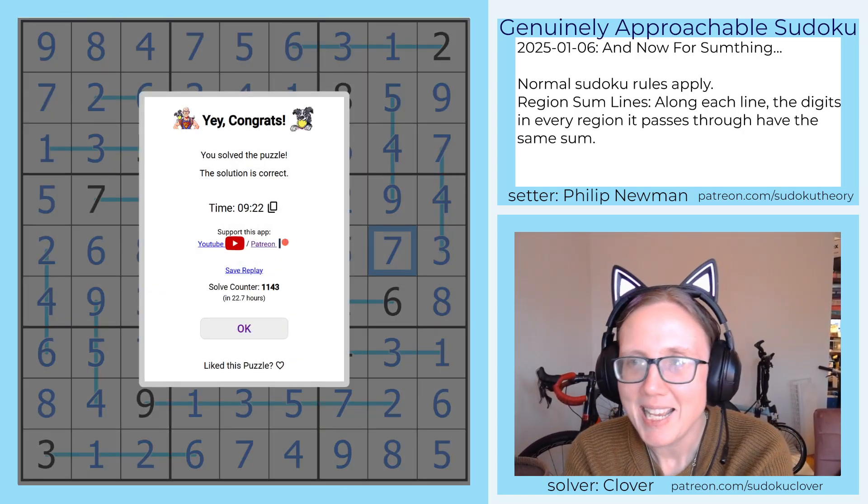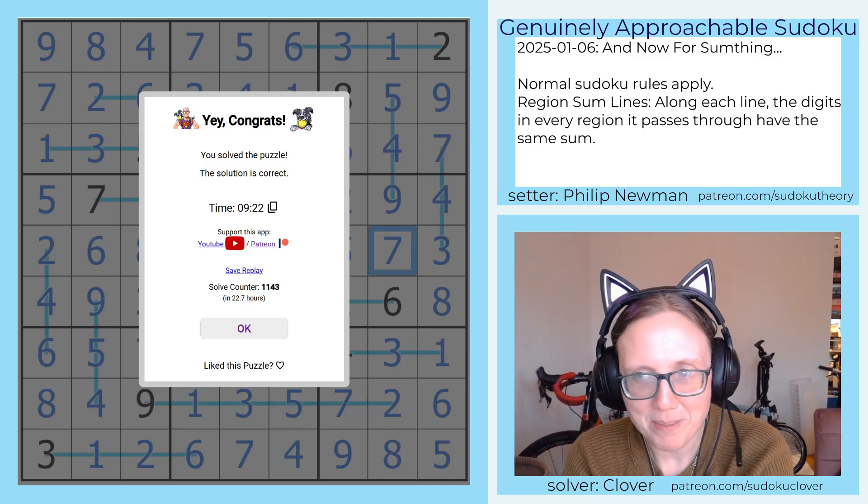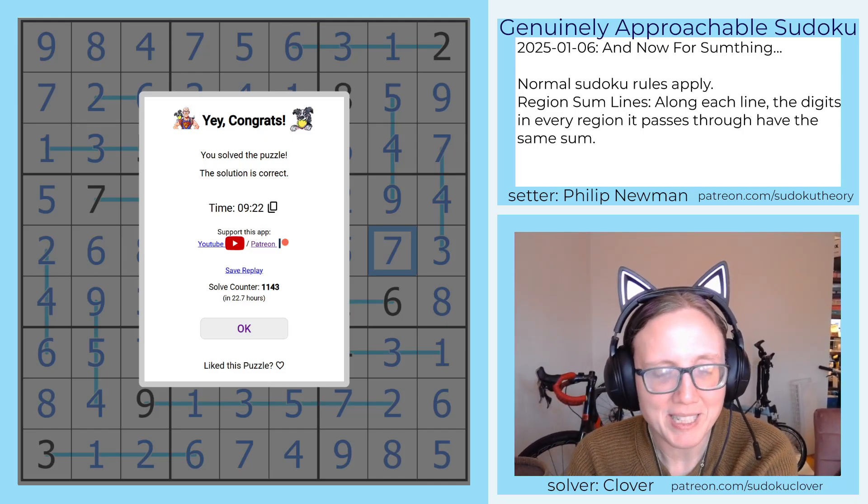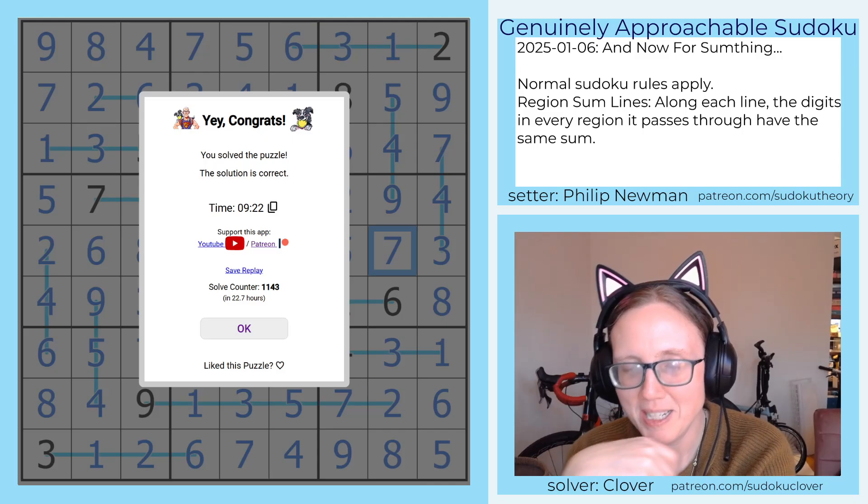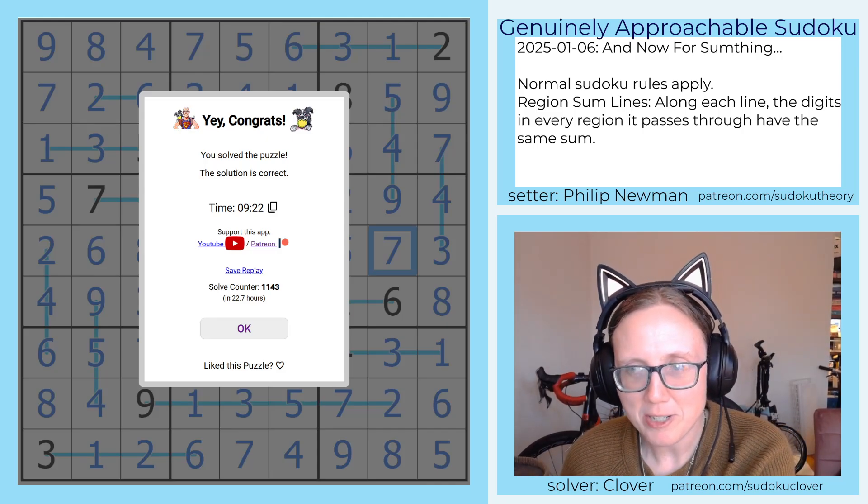And that is how you solve Philip Newman's And Now for Something. Hope you guys enjoyed that one. The link to solve it yourself is in the description below this video. And I will see you again three days from now.